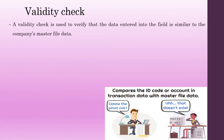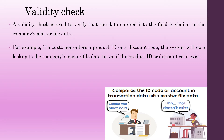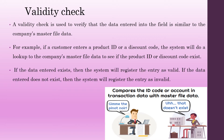Validity check is used to verify that the data entered into a field matches the company's master file data. For example, if a customer enters a product ID or a discount code, the system will do a lookup in the company's master file to see if it exists. If the data exists, the system registers the entry as valid; if it does not exist, the entry is registered as invalid.